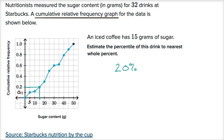Another way to think about it — you could convert these to percentages. You could say that 20 percent has 15 grams of sugar or less, so an iced coffee is in the 20th percentile.